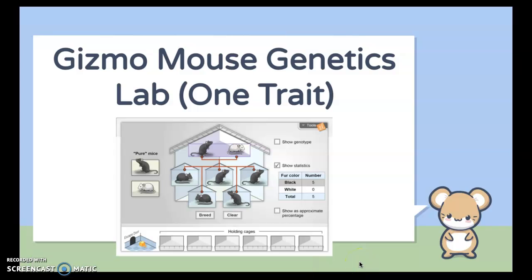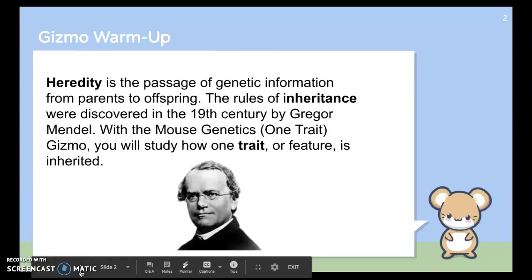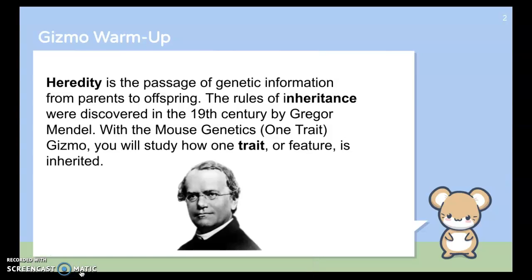So for today, we asked you to complete the Gizmo Mouse Genetics Lab that dealt with looking at what happens when you cross different organisms for one specific trait. We've been talking about this and working through Punnett Squares in class, and we want you to be able to understand why you get the results that you do in Punnett Squares and in real life situations. So a quick review or warm up,